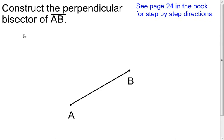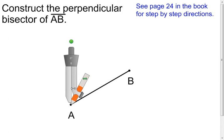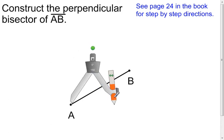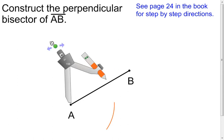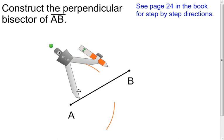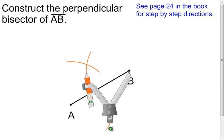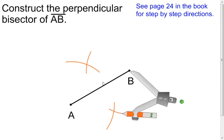Now I want to construct the perpendicular bisector of a segment — not just the bisector, but the perpendicular bisector. This is no different than constructing the regular bisector. Put the point of the compass at one end point and make an arc on one side and an arc on the other side. Move the point to the other end point and do the same. Now you have two intersection points — connect them with your straight edge, and they are perpendicular.